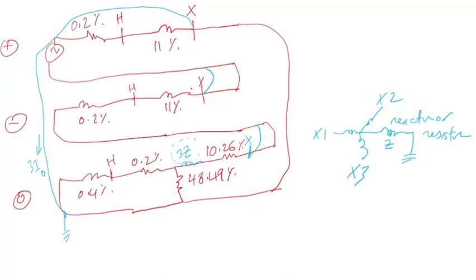Hello and welcome to Engineering Simple. In the previous video I talked about the objectives of this video series: calculating the line-to-ground fault, then trying to limit the fault current to a certain limit. We can do that by adding a neutral grounding resistor or a neutral grounding reactor to the neutral of the low voltage windings. This is where I left off — I started drawing the sequence networks.